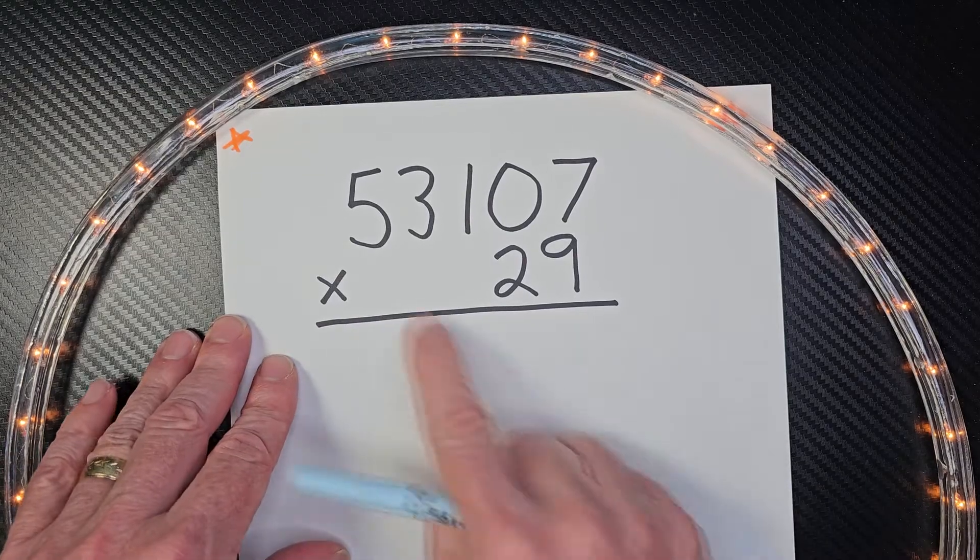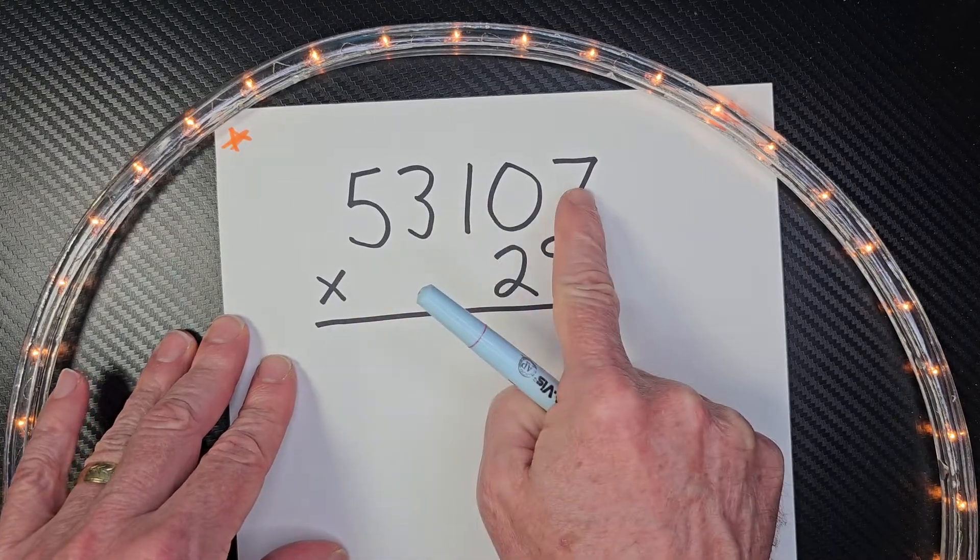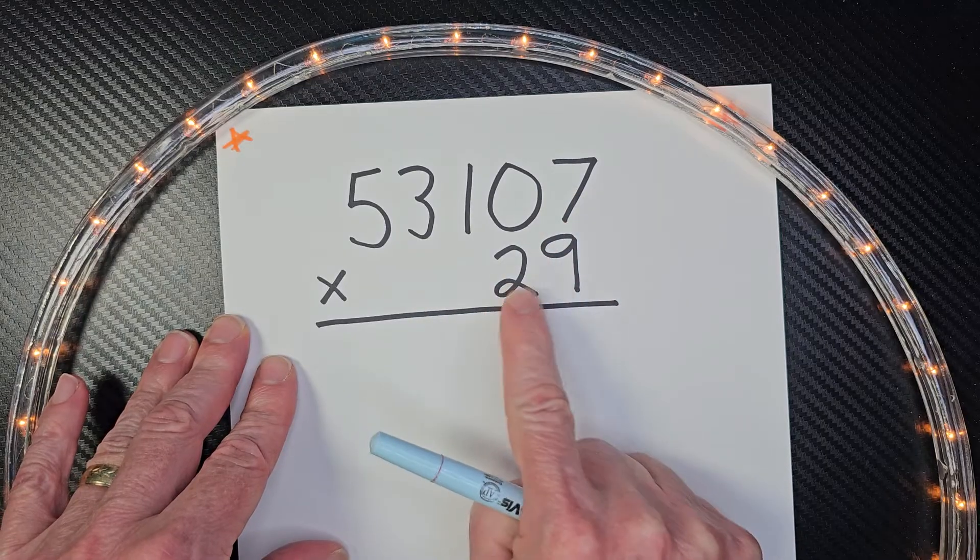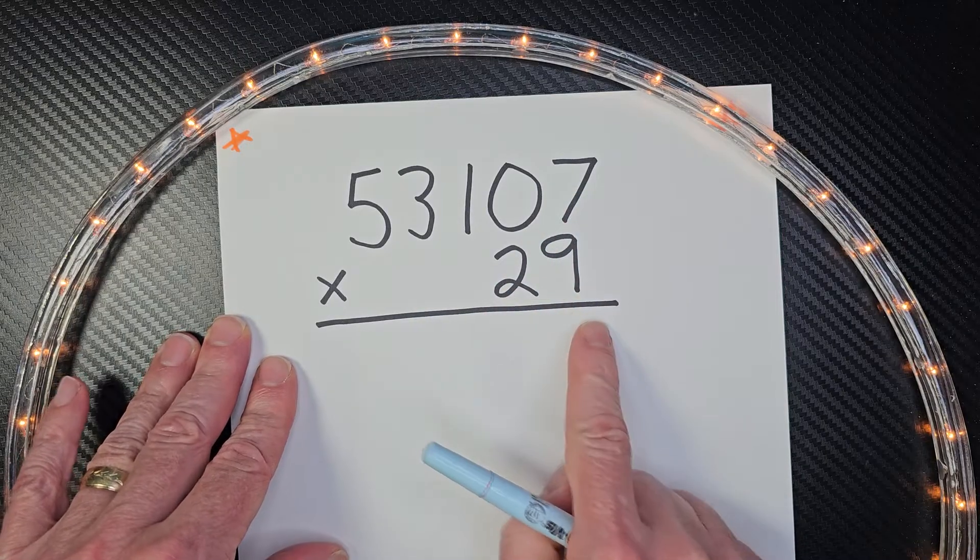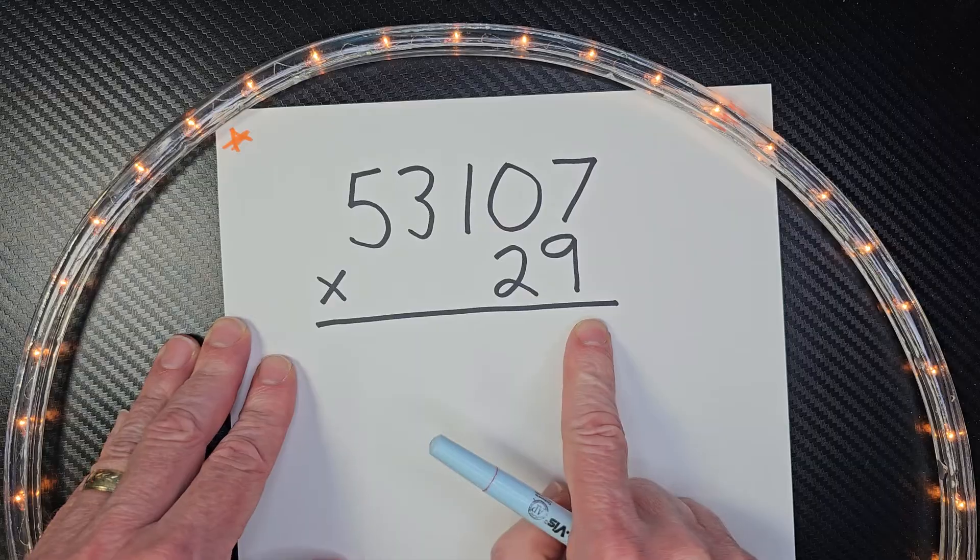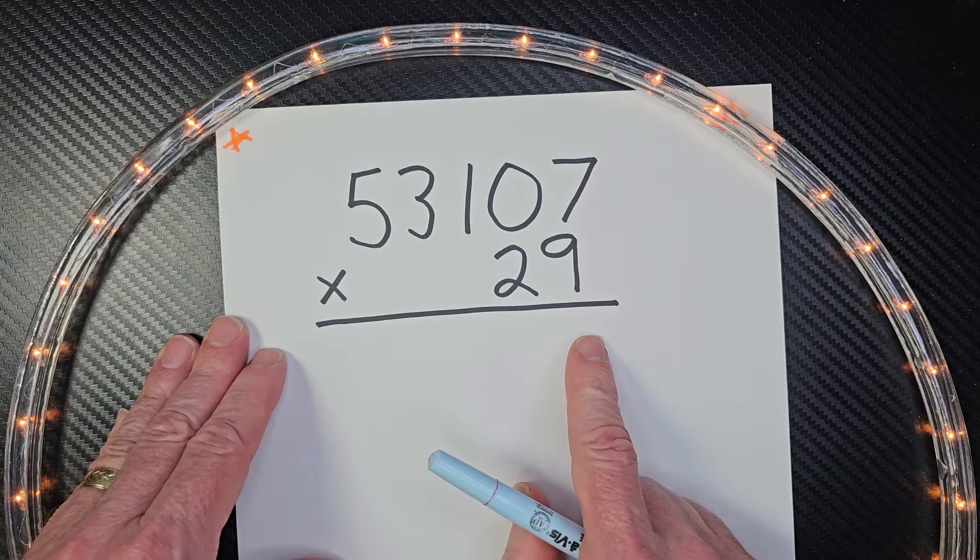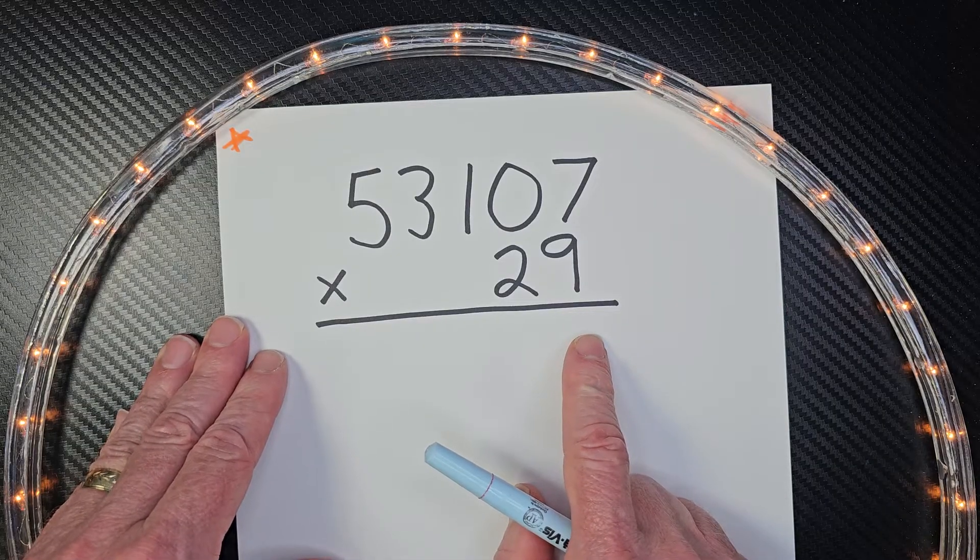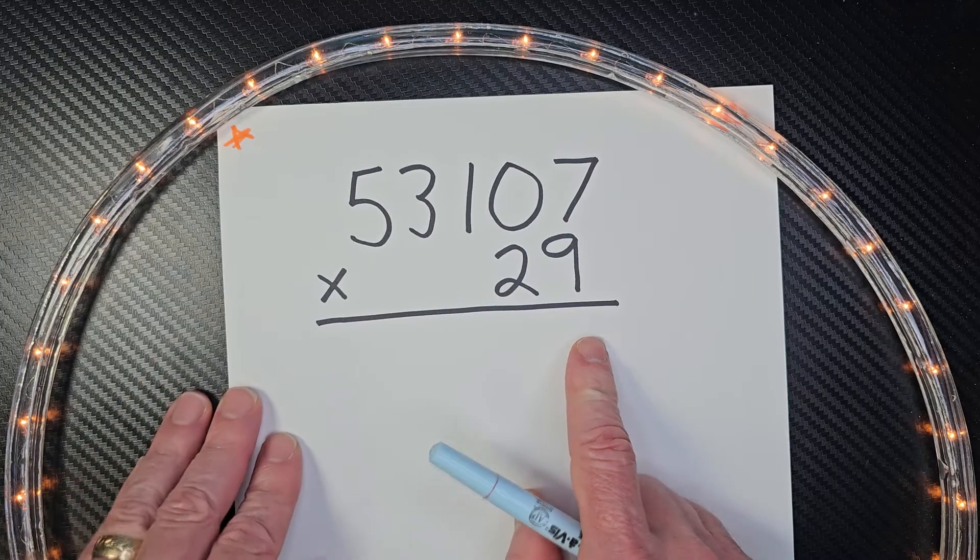Hey, welcome to the show. Here I have a one, two, three, four, five digit number multiplied by a two-digit number. If you think you can do this math challenge problem, try it on a piece of paper. Hit the pause button and when you're ready to check it with me, hit the play button.